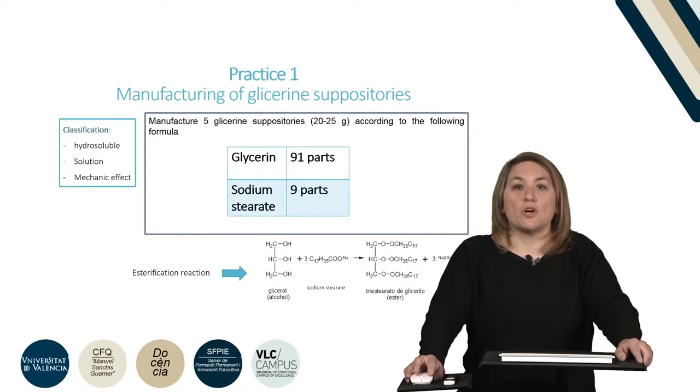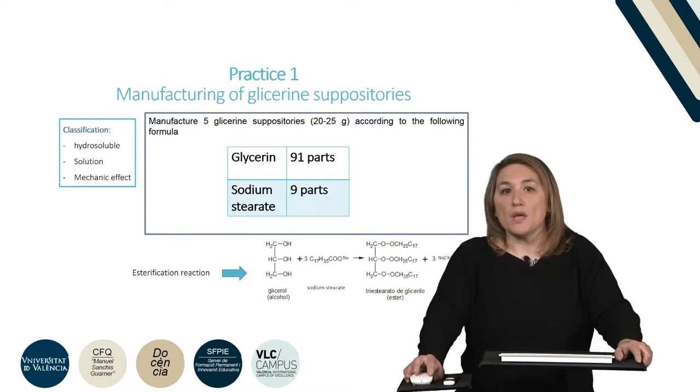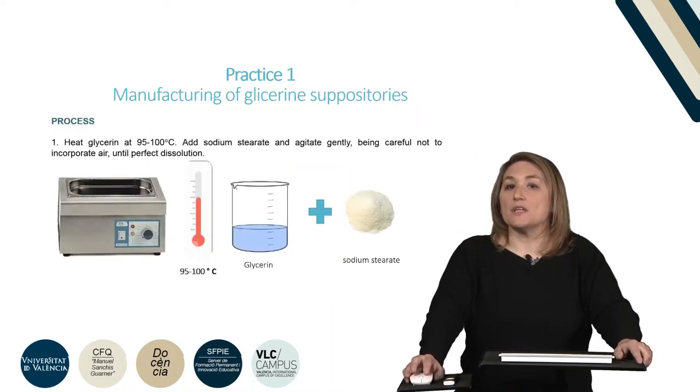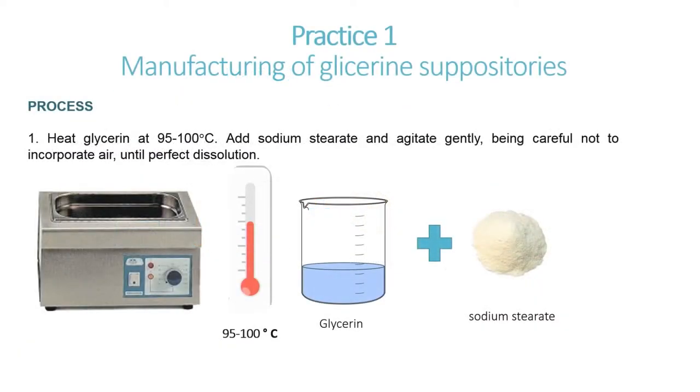For the elaboration of our glycerin suppositories, we will use the formula of the slide. First, the bath should be heated to 95 degrees and then introduce the glycerin. When it is at the required temperature, sodium stearate is added little by little while stirring gently to avoid adding air.